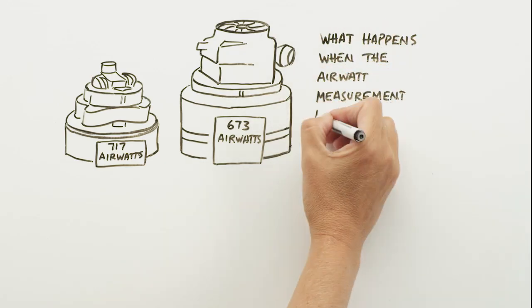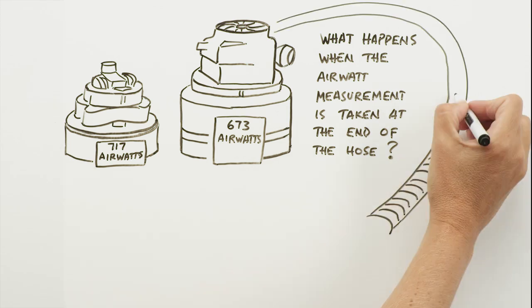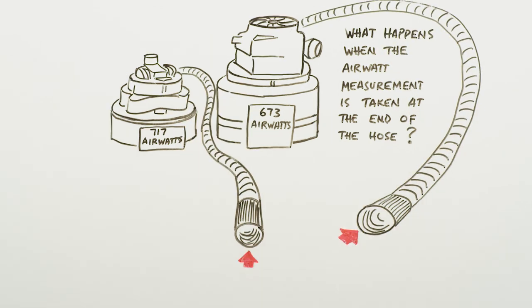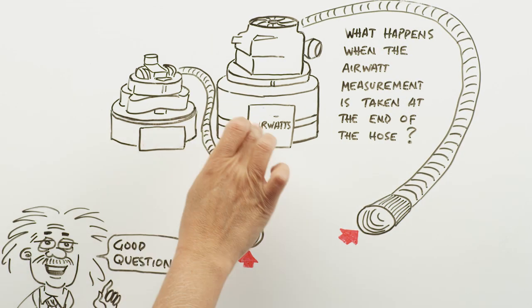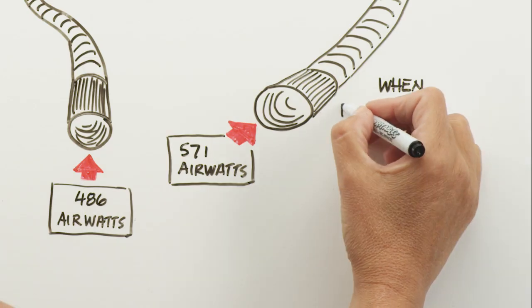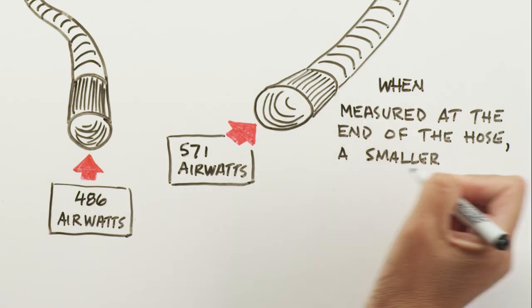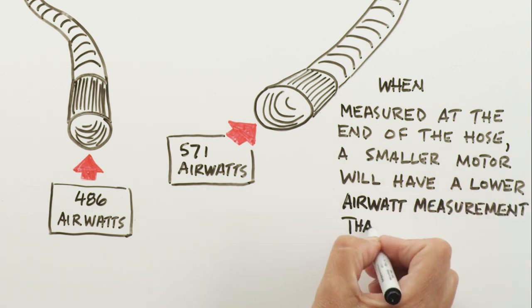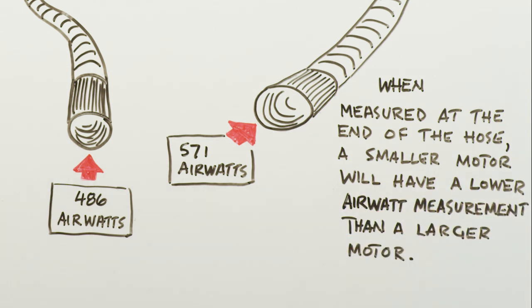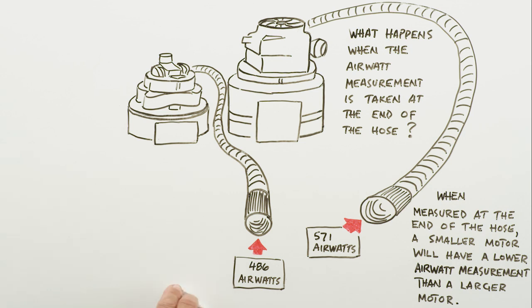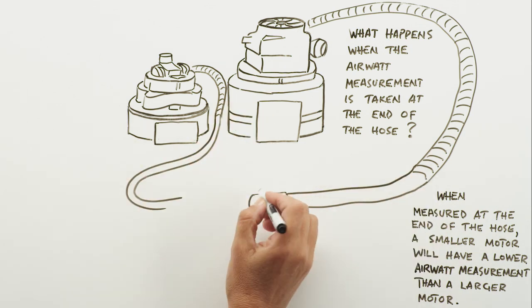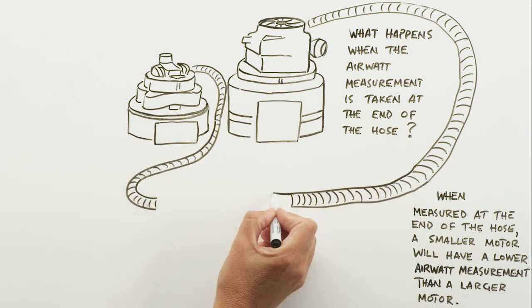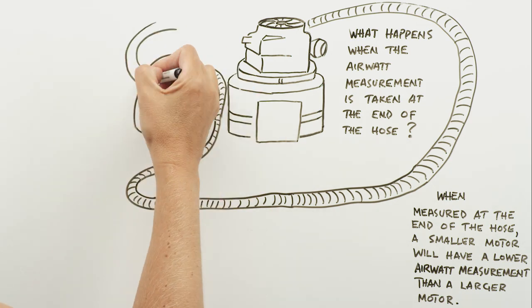What happens when the airwatt measurement is taken at the end of the hose? Good question! When measured at the end of the hose, a smaller motor with less suction will have a lower airwatt measurement than a larger motor with more suction. So you see, brochure airwatt are not a very good way to evaluate the best performance or value of a vacuum system.